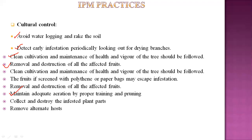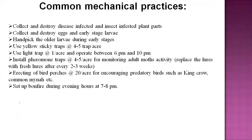Collect and destroy infested plant parts and remove alternate hosts. Around the pomegranate orchard, weeds such as Gudwill and Wasan are important alternate hosts of the fruit sucking moth. Removing these two weeds eliminates the chance of increasing the fruit sucking moth pest population. This is a very important cultural control practice.